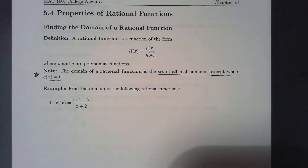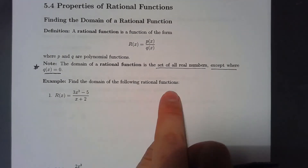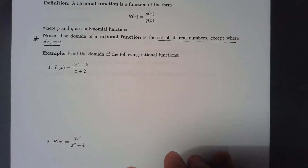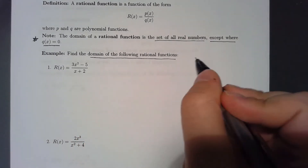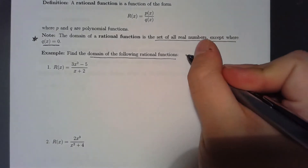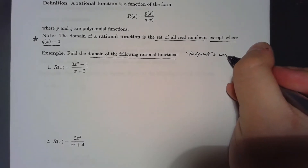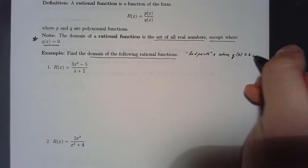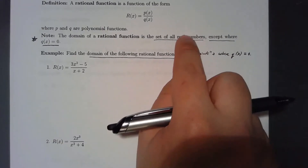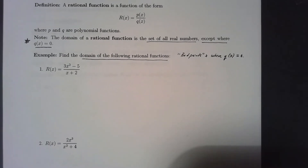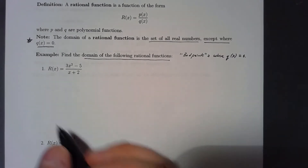The domain of a rational function is the set of all real numbers except where the denominator equals zero, because that leads to division by zero, which obviously can't be done. Finding the domain is just finding the bad points — where q(x) equals zero. Once you find those values you omit them from the real numbers, and what's left is the domain.